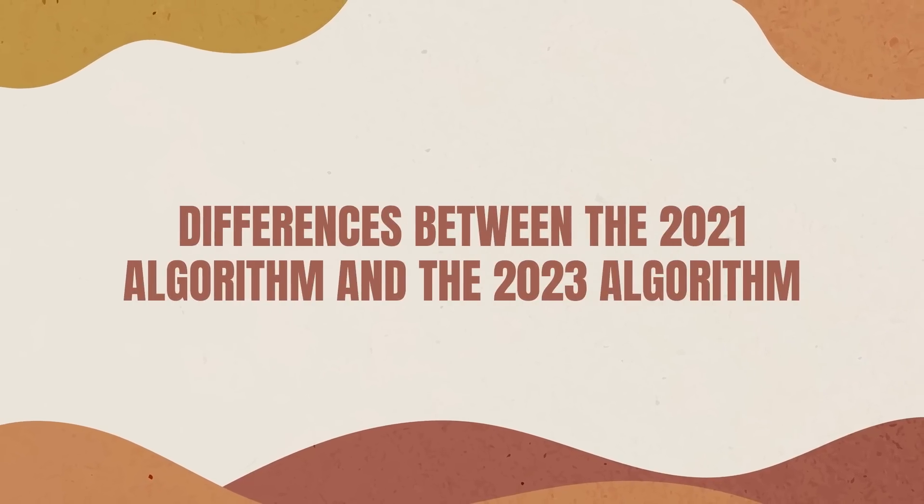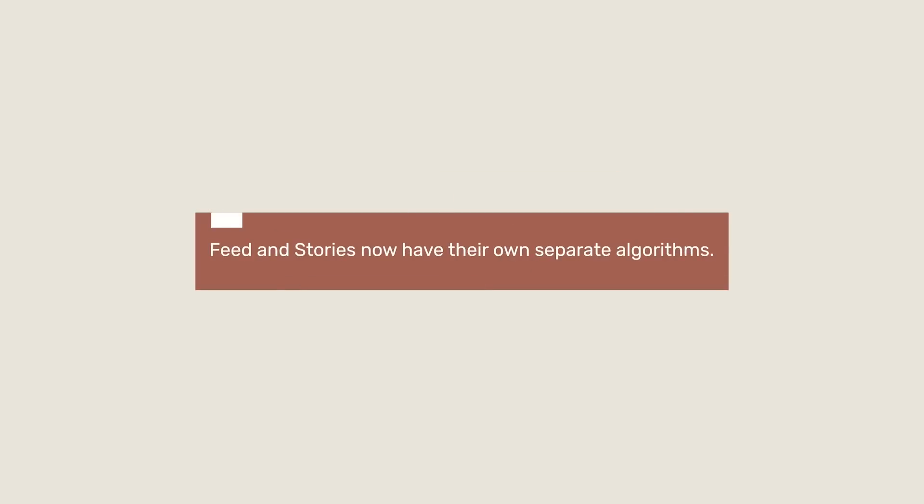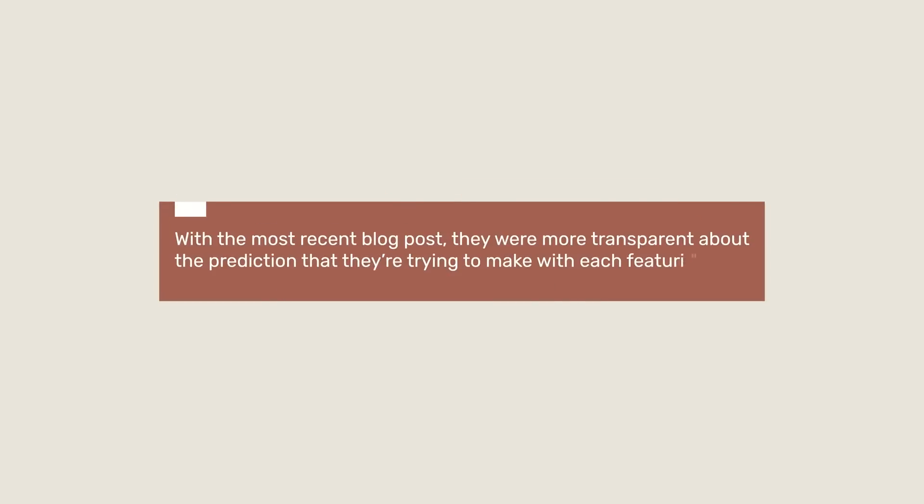Now that we understand each individual algorithm, let's talk about the differences between the 2021 algorithm blog post and the most recent 2023 one. The first biggest change is that feed and stories now have their own separate algorithms — in 2021, feed and stories shared the same algorithm. The next difference is that the 2023 blog is much more transparent about the predictions they're trying to make with each feature. Before they'd just say 'we look at these signals and predict your likelihood of engaging,' but now for Reels they specifically say they're predicting how likely you are to tap into an audio because they want you to be inspired to create. This transparency helps us understand the most important actions to take on each specific feature.